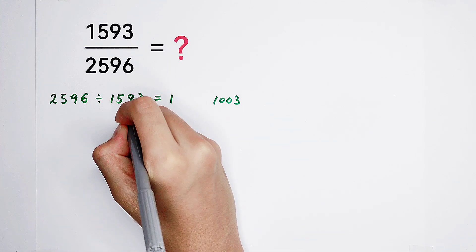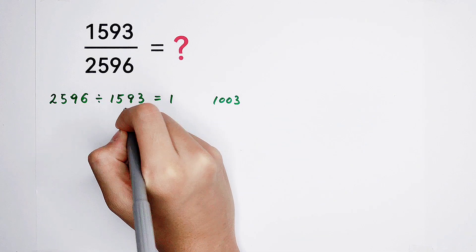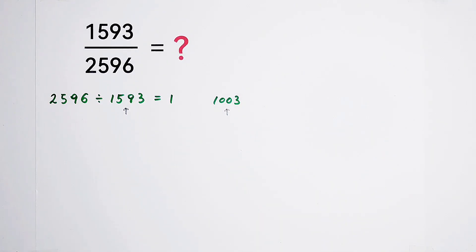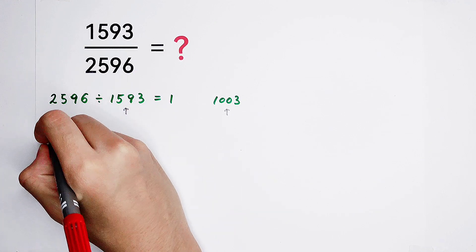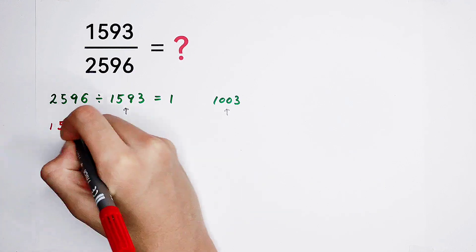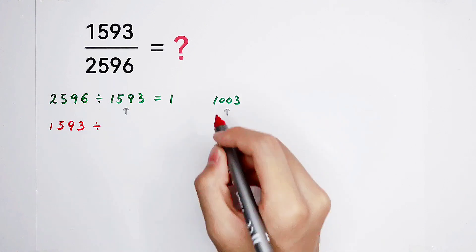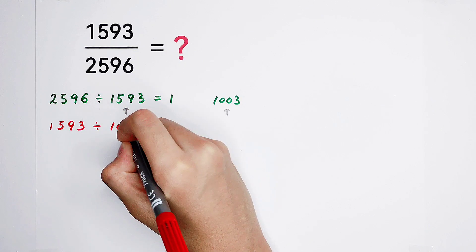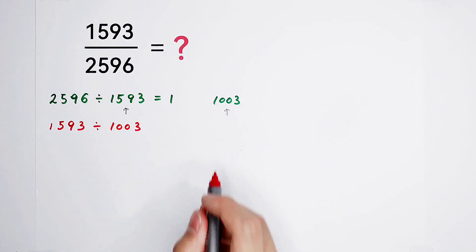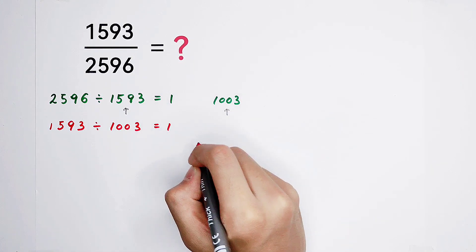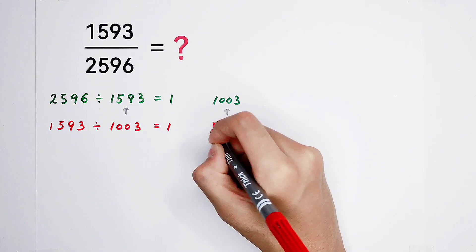Now, compare our divisor with this remainder. Which one has the bigger value? Of course, our divisor, 1,593. Then, let this number divide by our smaller number, our smaller remainder. Then, quotient is 1 and the remainder is gonna be 590.